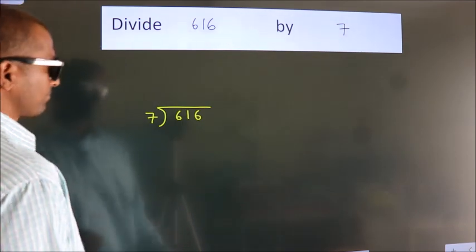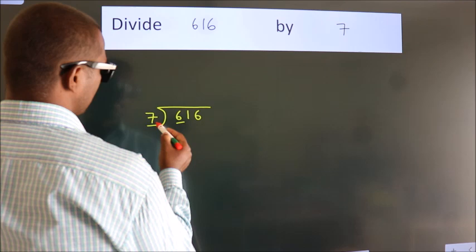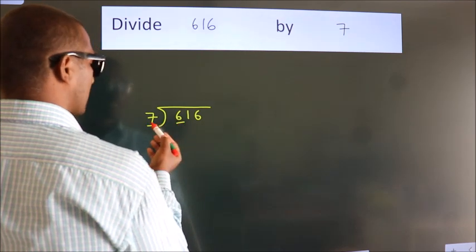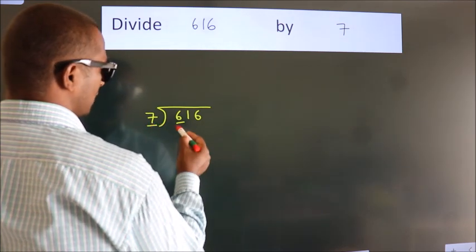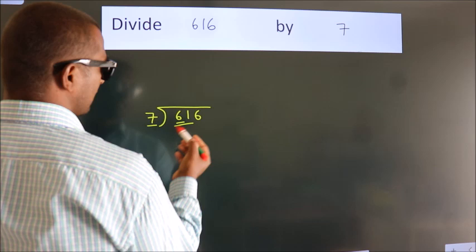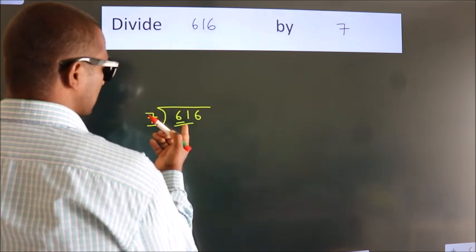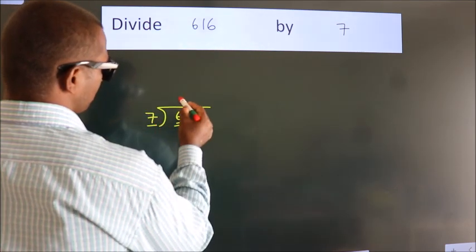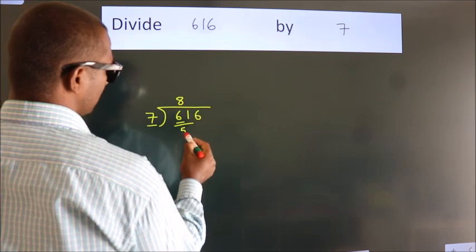Next. Here we have 6, here 7. 6 is smaller than 7, so we should take 2 numbers: 61. A number close to 61 in the 7 table is 7 times 8, which is 56.